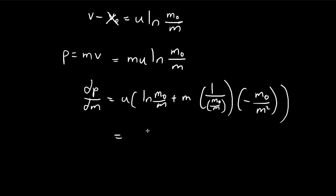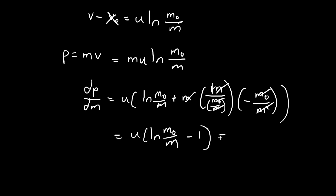We can do a bit of simplification. Notice that this m can be flipped upwards. You see that the two m's cancel out, and the two m0's also cancel out, so we get minus 1. Then in order to find the maximum, we let this whole expression equal zero.